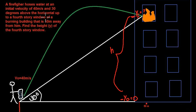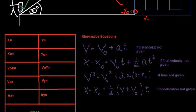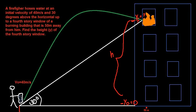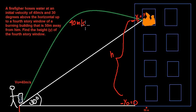We're given an initial velocity of 40 meters per second. We need to find our initial velocity in the x and our initial velocity in the y. Since we're dealing with two dimensions, the velocity isn't really 40 meters per second in both x and y — we have to separate this into two components.